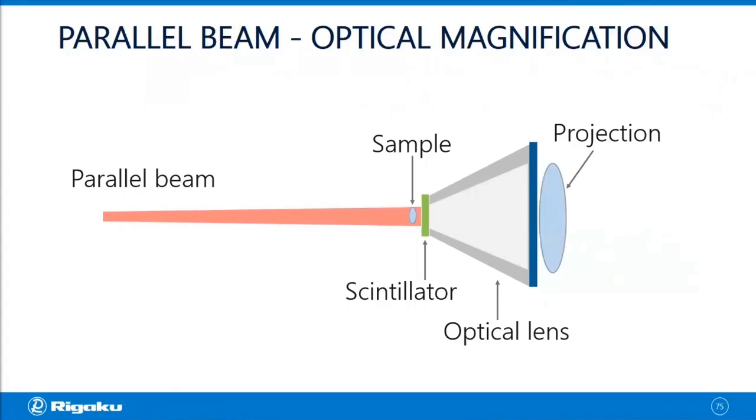And this geometry actually works very well for high-resolution imaging. But at the same time, it requires a high-power x-ray source. And that's because we are using only the parallel portion of the x-rays, and also you have to use a pretty thin scintillator to achieve high resolution.